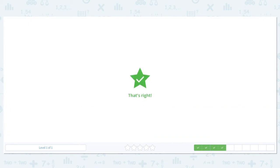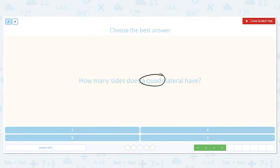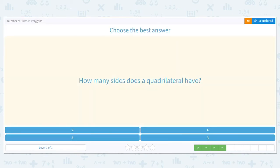Ten. Good job. How many sides does a quadrilateral have? Quad means how many? I think of an ATV, which is also known as a quad. How many wheels does that have? Four. So a quadrilateral has four sides.